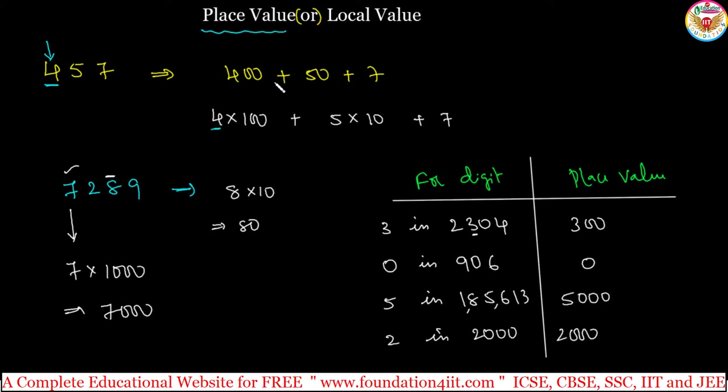When you consider place value for any non-zero digit, we can see the position of the particular number. In 457, 7 is in the units place, so 7 itself is the place value. The position of that value is the place value. Now, let's see some problems based on place value.